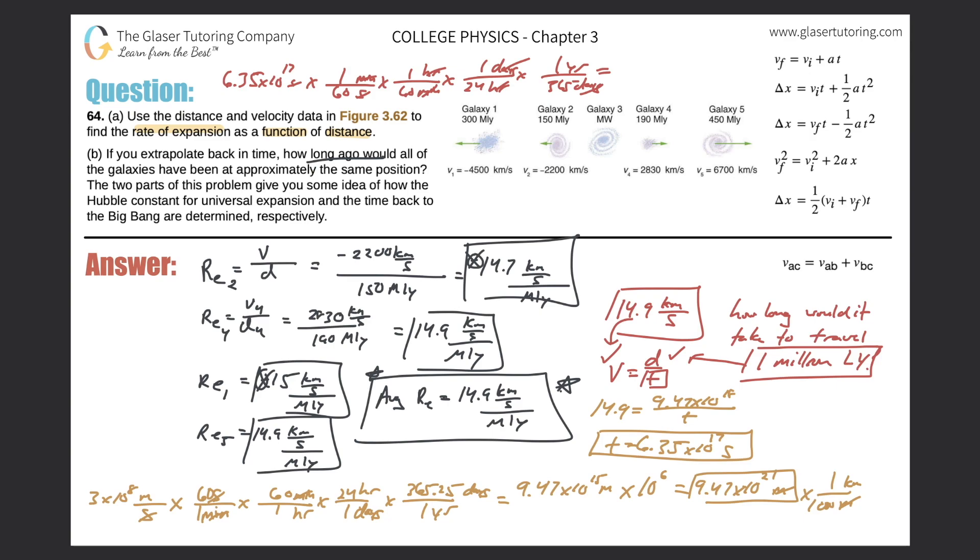There it is. We get a value of approximately 2.01 times 10 to the 10 years. In other words, it would be about 20 billion years. That's the age of the universe, approximately. So thanks for tuning in. Hope this helped. Please remember to subscribe and I will see you in the next lesson.